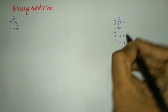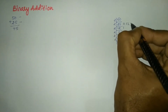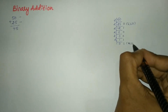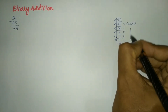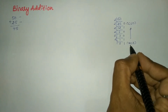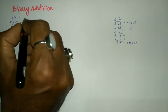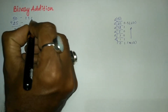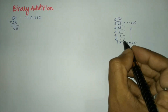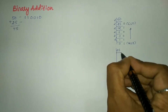The first remainder is called the least significant digit and the last remainder is called the most significant digit. We write the binary equivalent from most significant digit to least significant digit, giving us 50 in binary as 1 1 0 0 1 0.